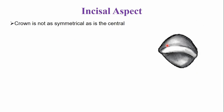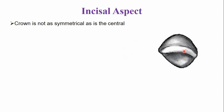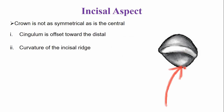From the incisal aspect, the crown is not symmetrical — the mesial side and the distal side are not the same, unlike the mandibular central incisor. This asymmetry is because the cingulum is offset more towards the distal side, rather than being centered on the tooth.